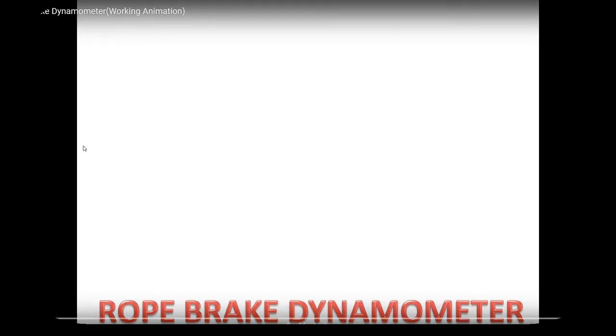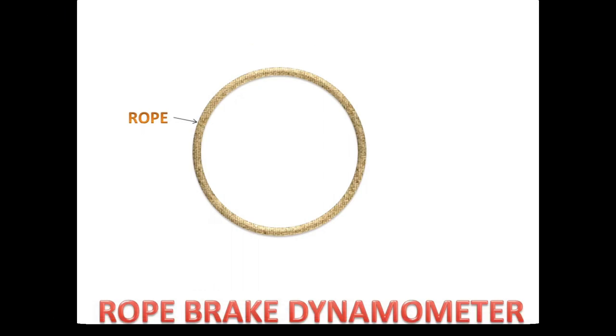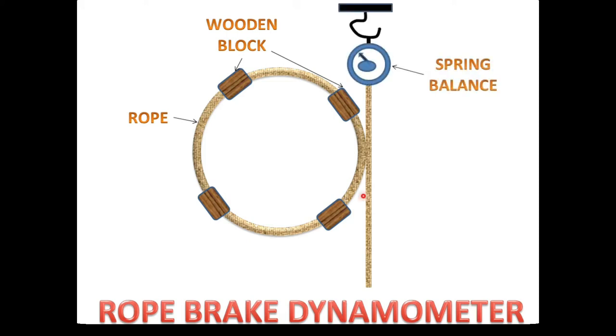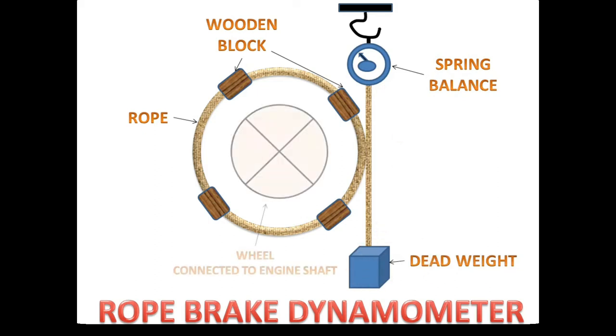Now we will discuss the rope brake dynamometer and how it works for measuring the power of a wheel. The parts of a rope brake dynamometer are: a rope with wooden blocks, connected to a spring balance at one end and a dead weight at the other end, and a wheel or pulley connected to the engine shaft for which we want to measure the power.